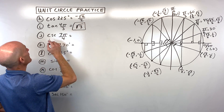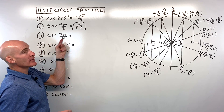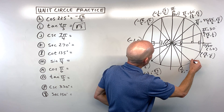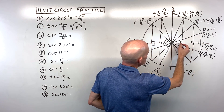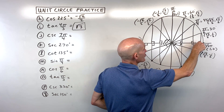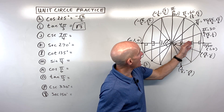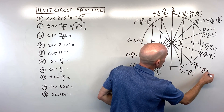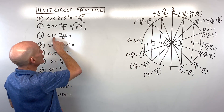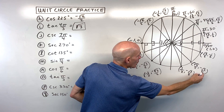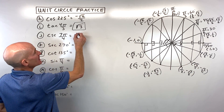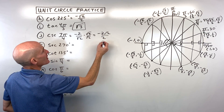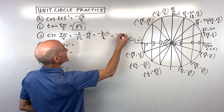Letter J: cosecant of 7π/4. Think of this as 1 and 3/4 π — go 1π plus 3/4 of π, landing in the fourth quadrant. The reference angle is 1/4 π (45 degrees). Coordinates are √2/2, negative √2/2 — y is negative. Cosecant is the reciprocal of sine: flip negative √2/2 to get negative 2/√2, rationalize to get negative √2.